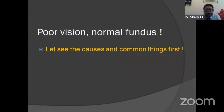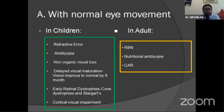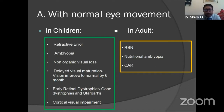What are the common things that we see? For example, with normal eye movement in children, there may be refractive error or amblyopia that can give rise to low vision with normal fundus. Non-organic visual loss sometimes can pose problems. One very important condition is delayed visual maturation, where vision improves to normal by six months. Early retinal dystrophy, such as cone dystrophy or Stargardt's, can also present in this scenario.